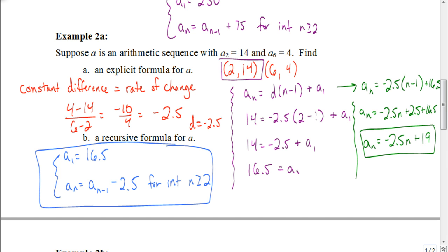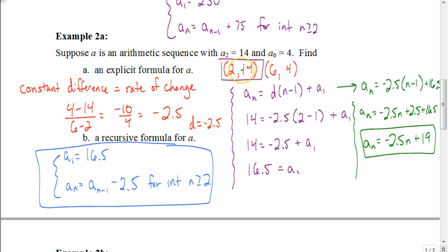Let's walk through those steps. First, find the constant difference — it's the same as your rate of change, so treat the given terms as coordinates and use the slope formula. Once you know your constant difference, plug one of those coordinates into the formula to solve for the first term. Once you know the first term and constant difference, you can easily find both the explicit formula and the recursive formula.